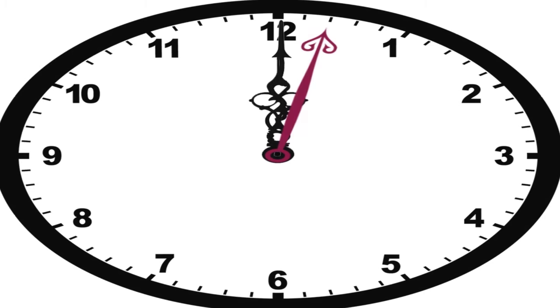In uniform motion, an object travels equal distance in equal intervals of time. For example, a clock on the wall.